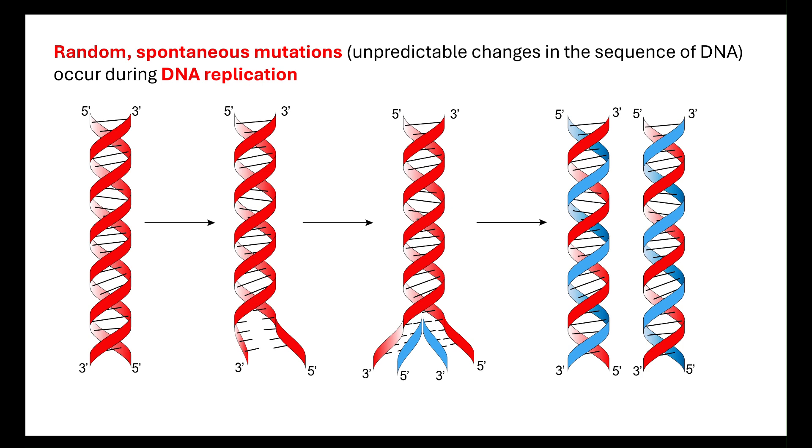That links to your cell division topic and looking at your checkpoints, which try to ensure that any of these errors that have occurred are corrected before the cell goes through the division process. However, that doesn't necessarily happen, so it's important that we note that they are random and they are spontaneous and they can be passed on. You'll learn more about that when you look at module six and mutations.